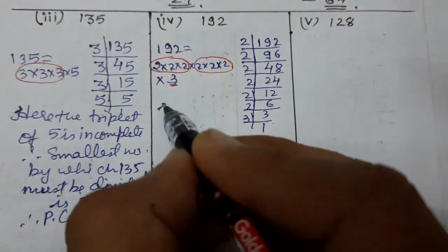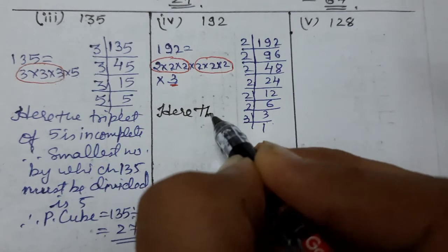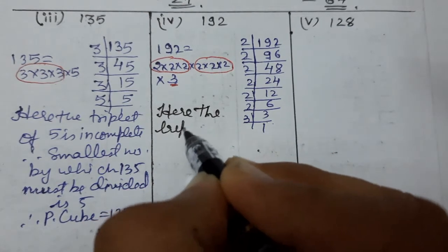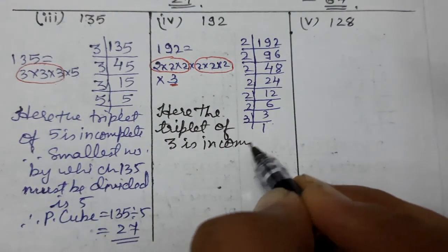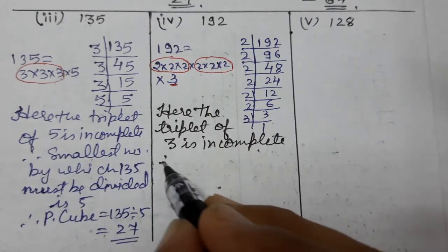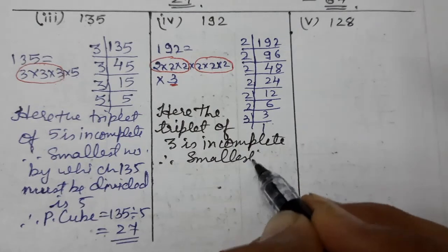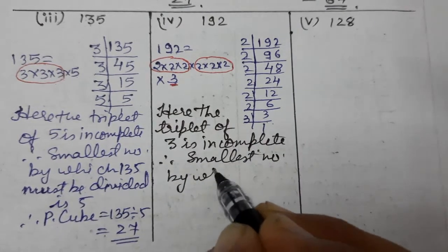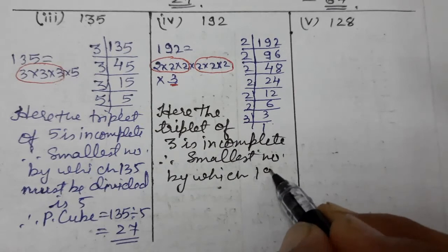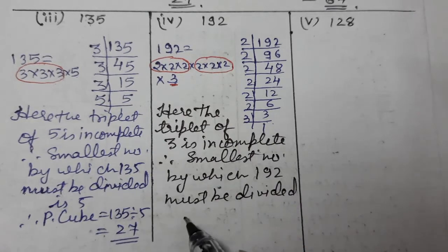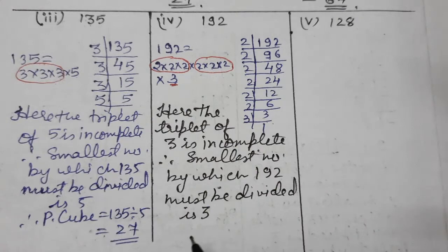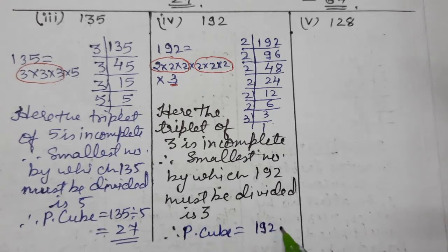The triplet of 3 is incomplete, therefore the smallest number by which 192 must be divided is 3. The perfect cube is 192 divided by 3, which gives 64.